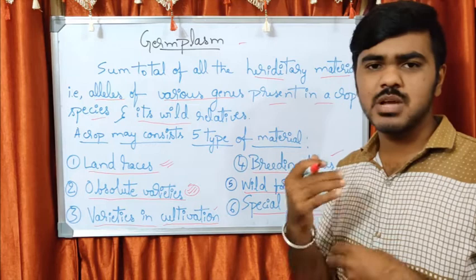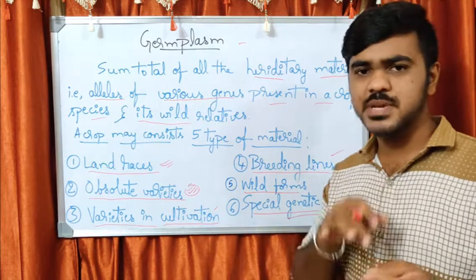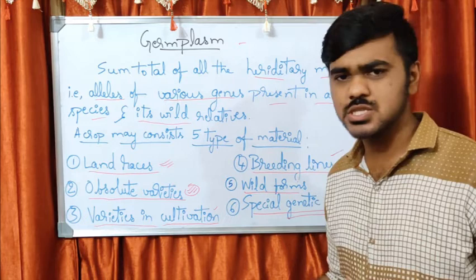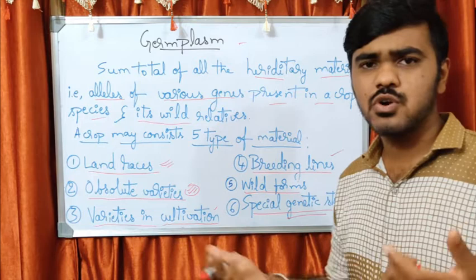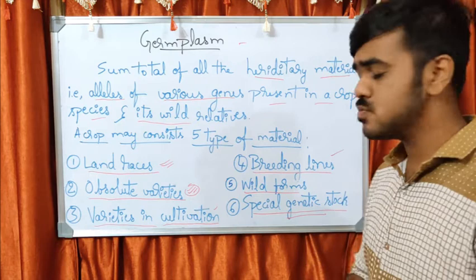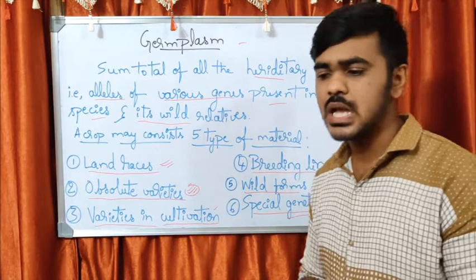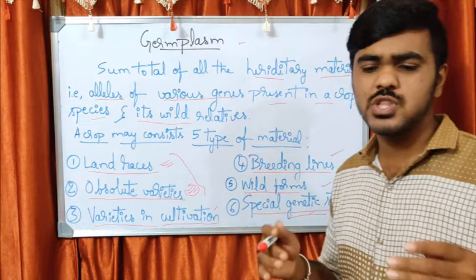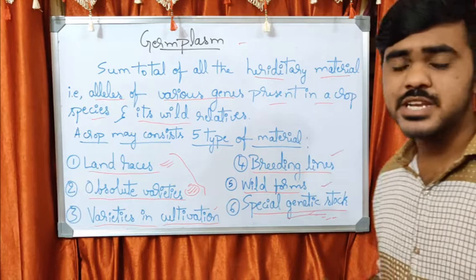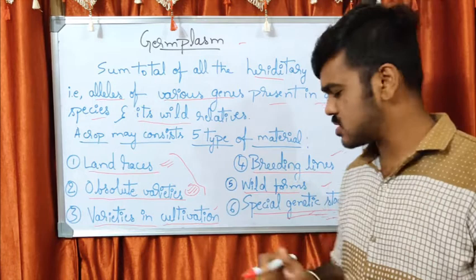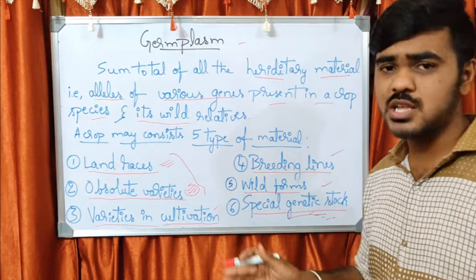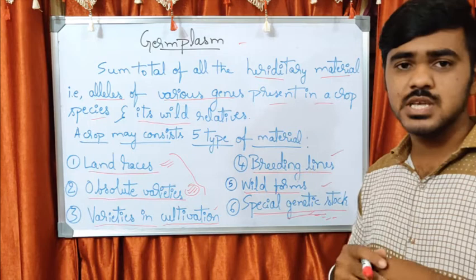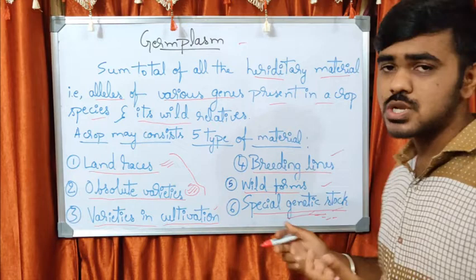The fourth type is breeding lines — once a breeding program starts, the cultivated crop lines involved are maintained as selections, and such lines can be used for further breeding programs with very potential value. The fifth type is special genetic stock — these are stocks maintained through biotechnological efforts like mutation, crossing, somaclonal variation, and so on, maintained in specialized laboratories for use in breeding programs.